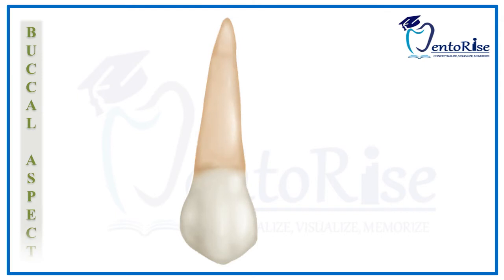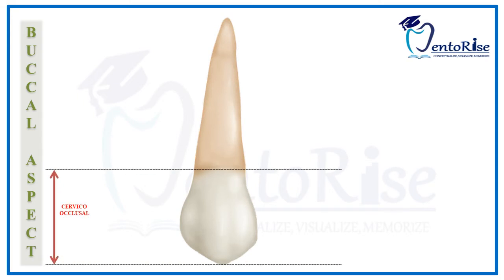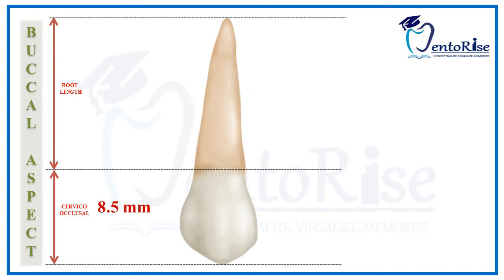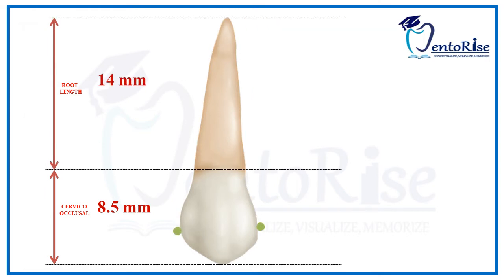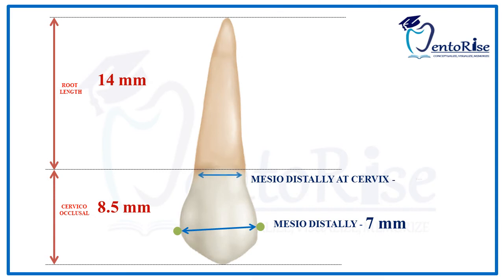Starting with the buccal aspect first, considering the first heading — the dimensions — the cervico-occlusal length, i.e. the length from the tip of the cusp to the highest point in the cervical line, is 8.5 mm, while the length of the root, i.e. from the highest point in the cervical line to the apex, is 14 mm. The mesiodistal dimension at the crest of contour is 7 mm, while the mesiodistal dimension at the cervix is 5 mm.